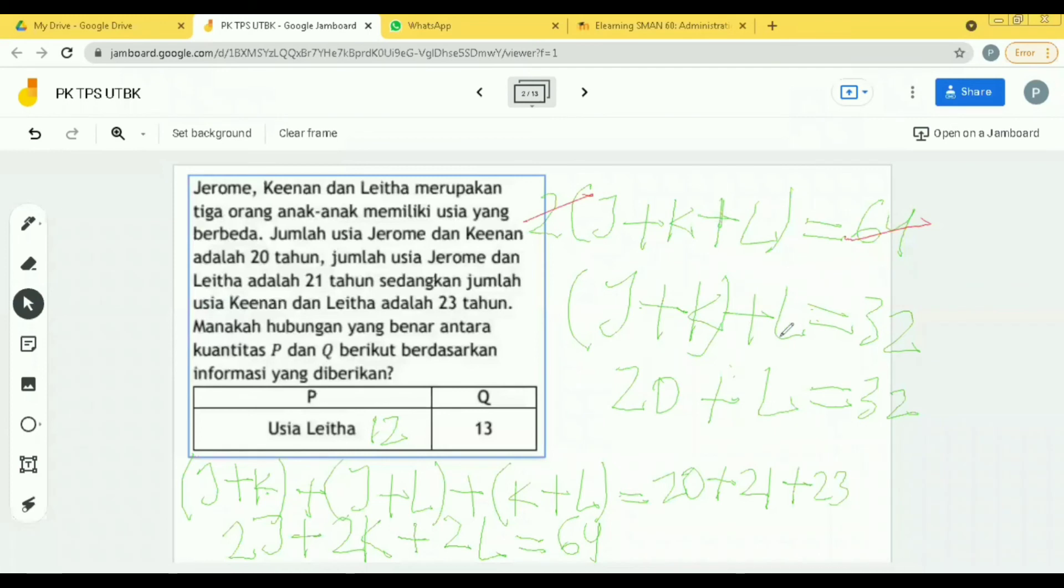Karena kita butuh untuk si L-nya saja, kenapa si L? Karena ada di sini, usia Leita. Jadi kita enggak butuh tahu usia si Jerome ataupun si Kinan. Yang kita butuhkan hanya usia si Leita. Yaudah si Leitanya biarkan. Si Jerome sama si Kinan kan tadi ada nilainya, Jerome dan Kinan 20. Berarti ini kita ganti dengan 20. Jadi tahu dapat 32 bagaimana? Kiri sama kanan dibagi 2. Kiri dibagi 2 habis, kanan dibagi 2 jadi 32.